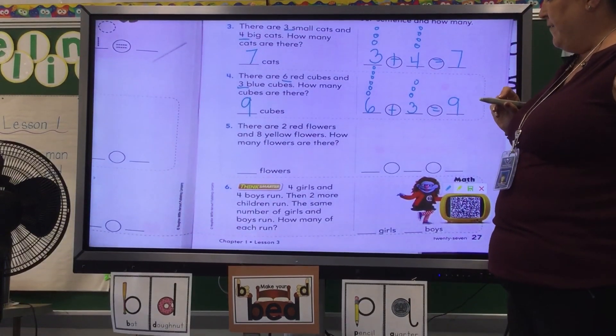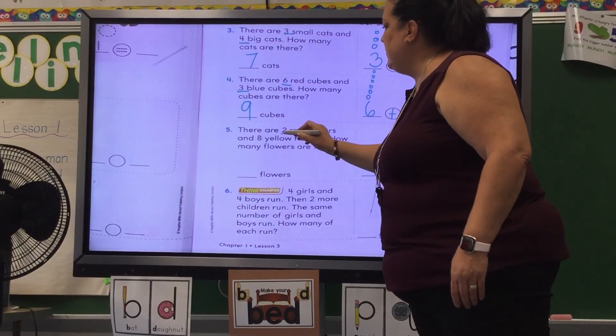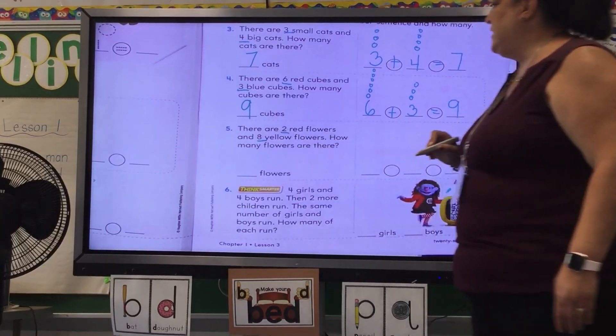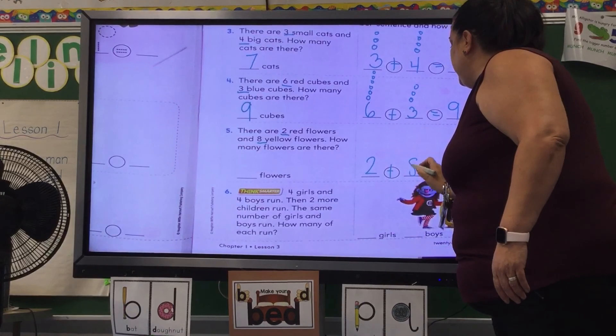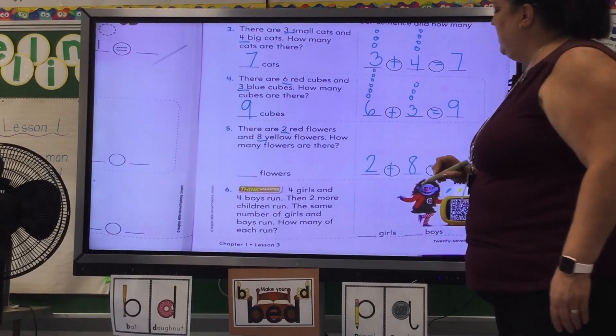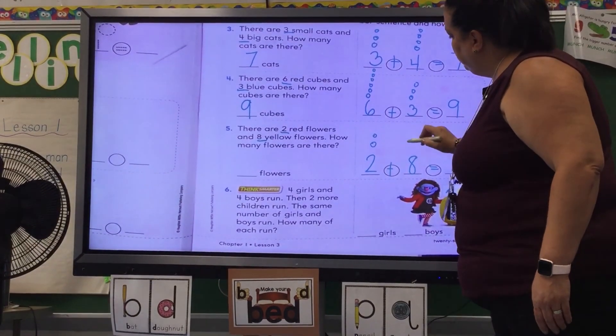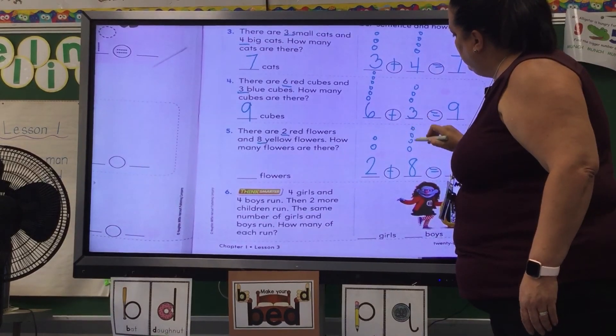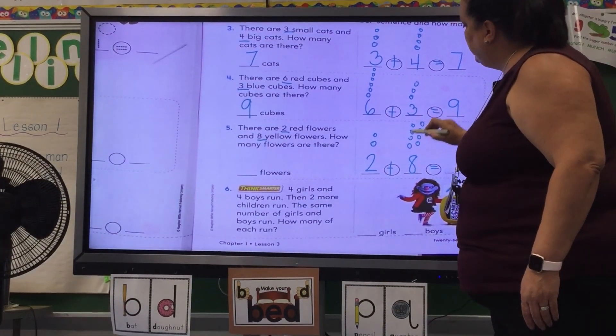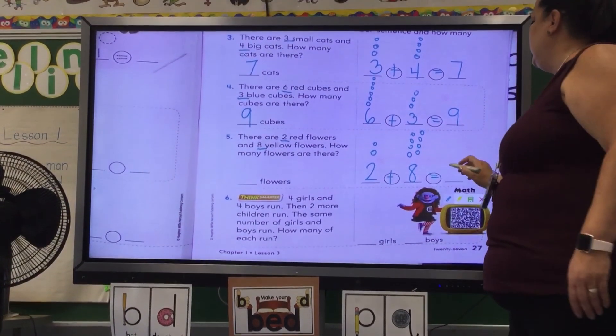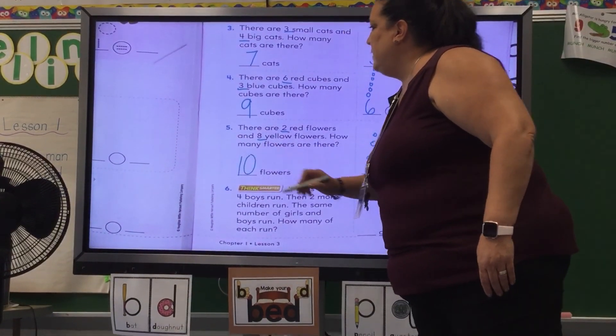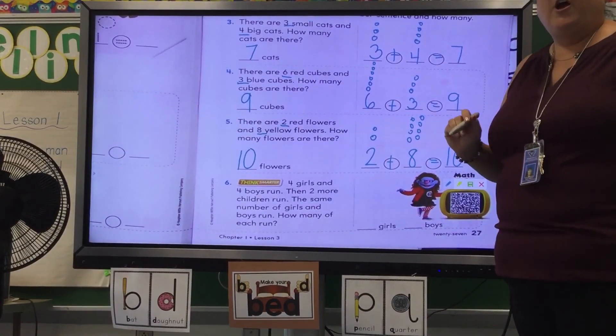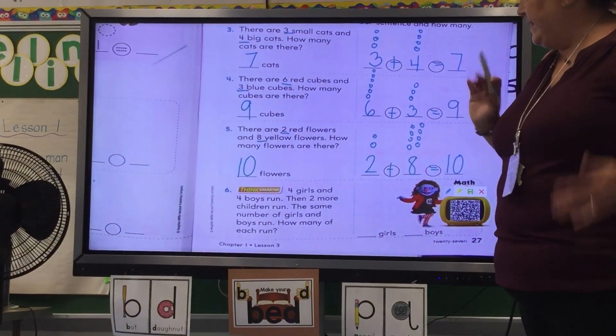Number five. There are two red flowers and eight yellow flowers. How many flowers are there? Two plus eight equals. You could draw your circles. What was your sum? Two plus eight equals ten. Ten flowers. How many of you got three, four, and five all correct? I hope everybody did.